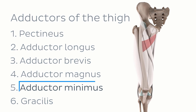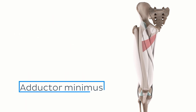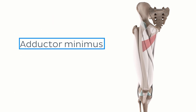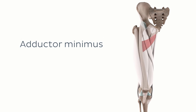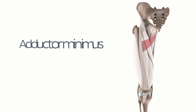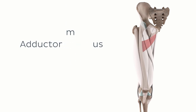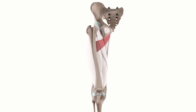The adductor minimus is one of the less well-known muscles of this group due to the fact that it's considered to be a variable muscle. This means that it varies in size, shape and attachment. You may also sometimes see it described as part of the larger adductor magnus muscle rather than as a separate entity itself.